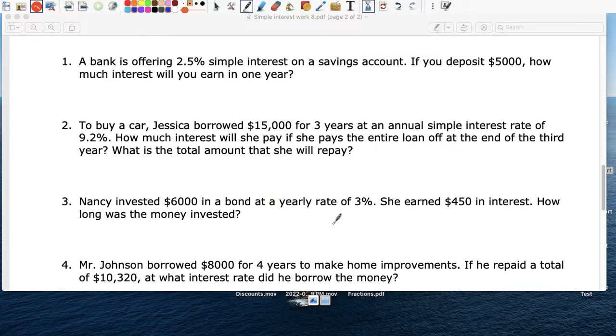Nancy invested, okay, so I equals PRT again. She put $6,000 down. The interest rate was 0.03. How long? So time is my unknown, and she earned $450, so that's my interest here.